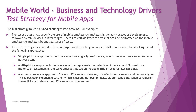The first is the single platform approach: reduce the scope to a single type of device, one OS version, one carrier, and one network type. Start with one platform, reduce the number of devices required, publish, and if you see a great response, move on to other platforms. You can use survey information and market data to decide which single platform to target, focusing on the most common device available in the country.